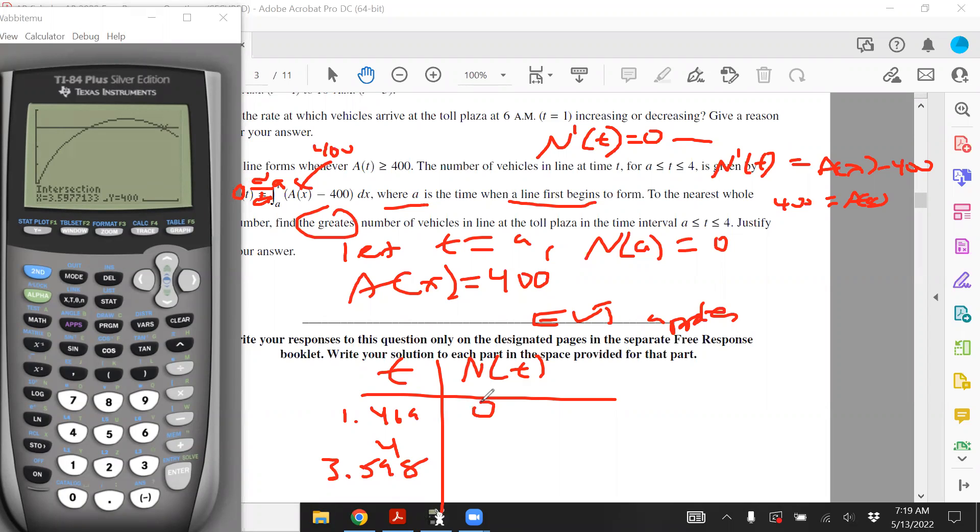Now, the number of cars here is definitely going to be 0 at that time. Because the lower limit is going to be the same. Because my integral now looks like this: 1.469, and of course, that's T. And I have A(X) minus 400. So now what I'm going to do is I'm going to integrate this at 4 and 3.598. So really simply go alpha window, integral. We're going to use alpha A for our lower. We're going to have 4 for upper. And we're going to do Y1 minus 400. And, of course, dX.